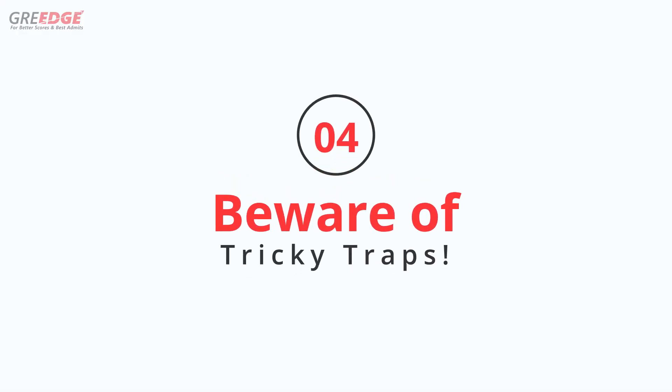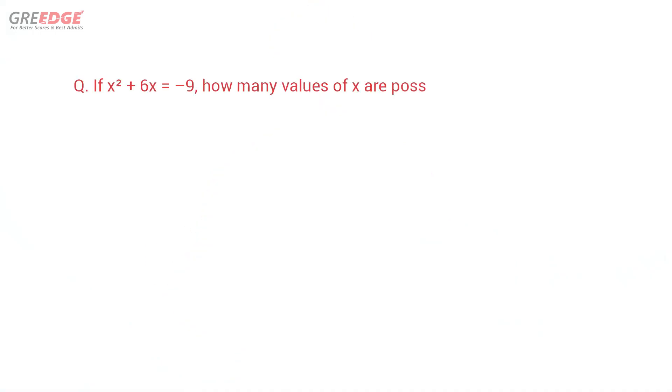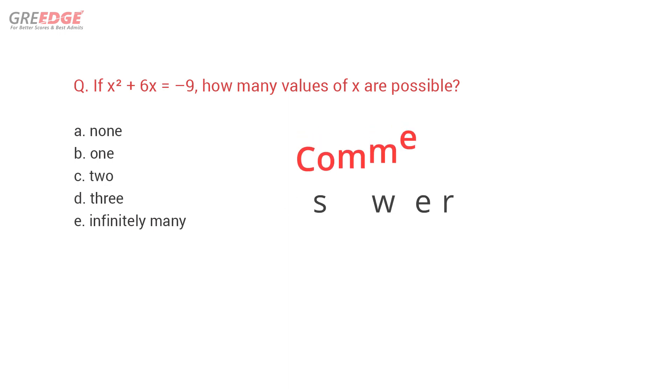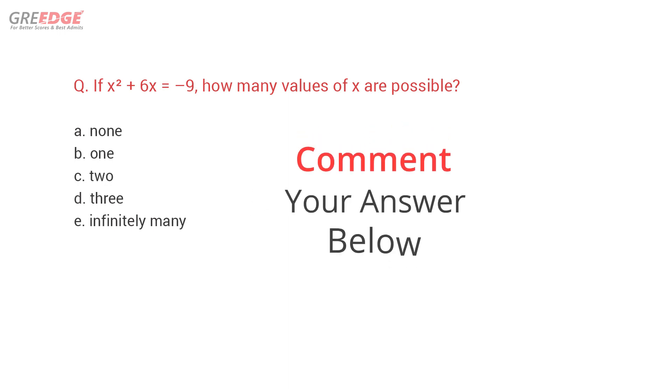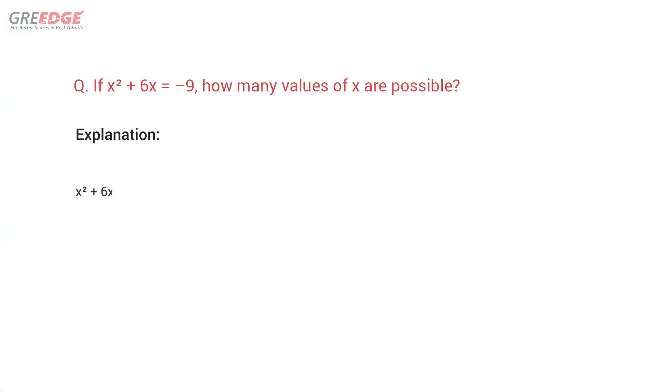Tip number four: beware of the tricky traps. We all know the Tom and Jerry story where Tom used to set up multiple traps for Jerry, but Jerry was smart enough to avoid them. You have to be like Jerry. Let's look at another question: if x² + 6x = −9, then how many values of x are possible? The options are provided. Leave a comment below and let us know if you got the right answer. If you chose option C, you are among the countless test takers who fall into the tricky trap of this question.